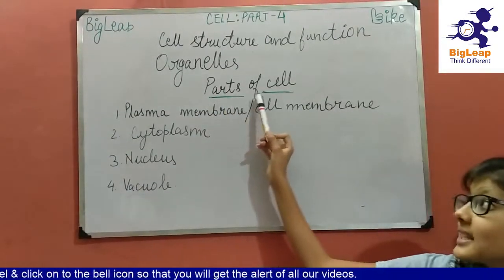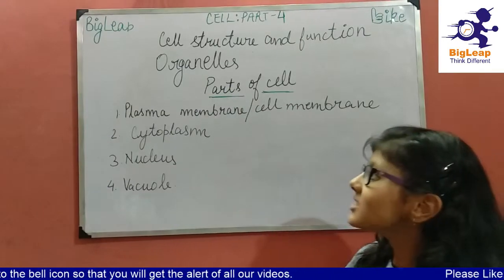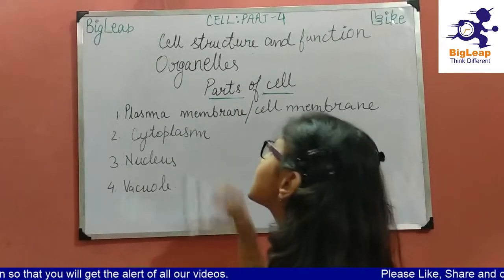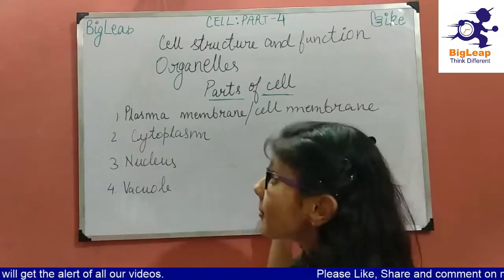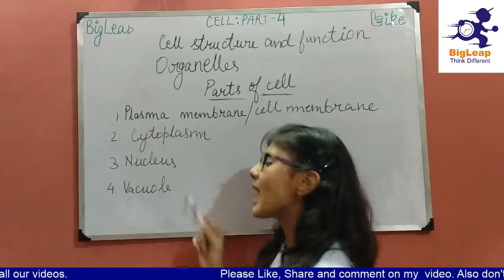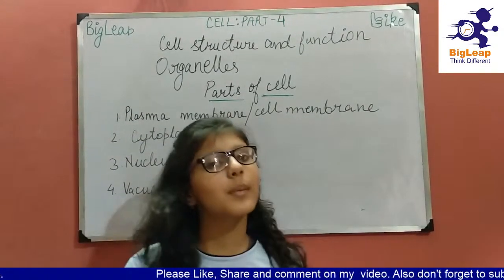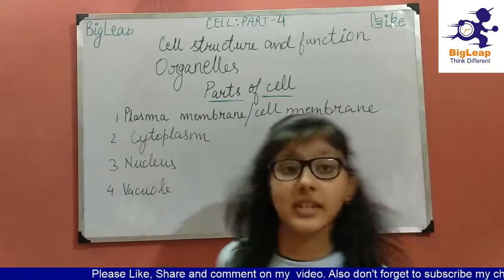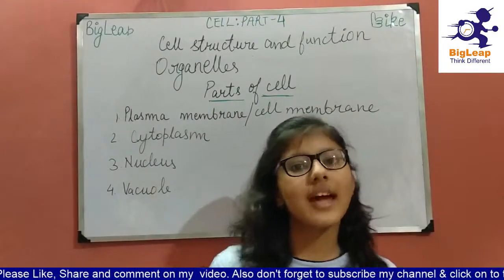Now let's look at the parts of cells. The parts of cells include the plasma membrane or cell membrane, cytoplasm, nucleus, and vacuoles. These are the topics we will be discussing throughout the coming videos.